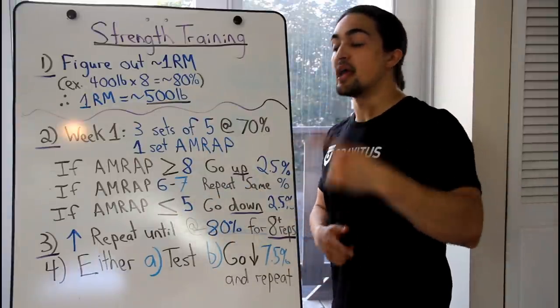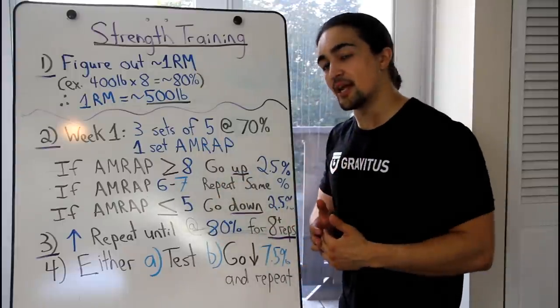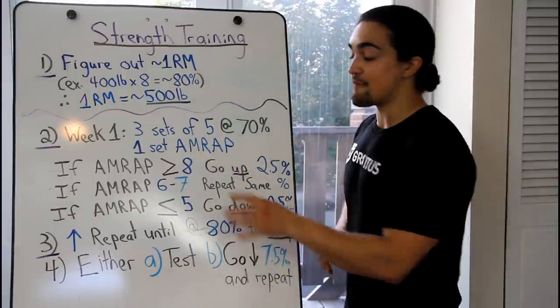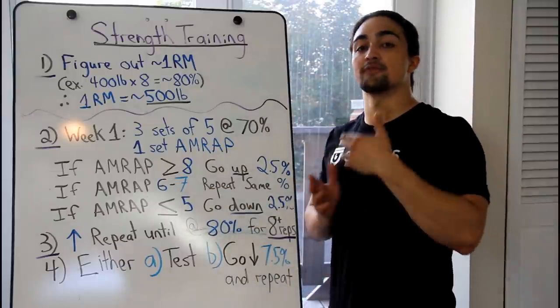If you do great, you increase the weight. If you do alright, so if you do six to seven reps, you'll repeat the same percentage. And if you don't do well, so if you get five or less repetitions, you'll actually go down in percentage. And that way, it helps manage fatigue.